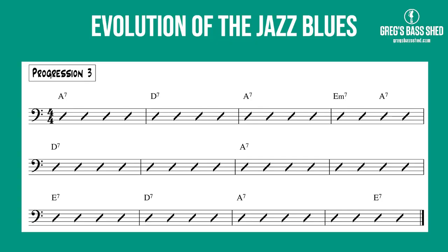From this point things start to get more interesting as we move away from the traditional 12-bar into the jazz blues. Look at this third progression — it's very similar to progressions one and two, but hopefully you've spotted we've got an E minor 7 and A7 added into bar 4. When we add chords, these are called additional chords. When we change chords to different ones, these are called substitution chords. Both are really common in jazz — players add them in all the time. This E minor 7, A7 to D7 is called a 2-5-1.